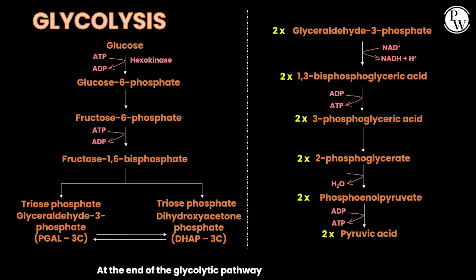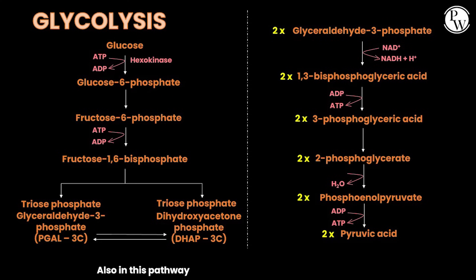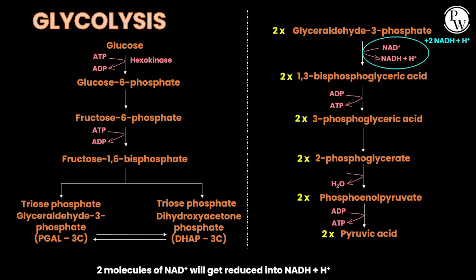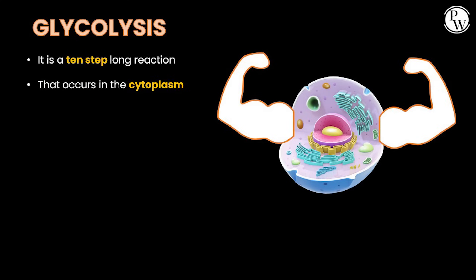At the end of the glycolytic pathway, there will be a net gain of two ATP molecules. Also in this pathway, two molecules of NAD+ will get reduced into NADH + H+. Glycolysis is a 10-step long reaction that occurs in the cytoplasm, also known as the EMP pathway.